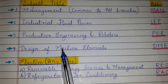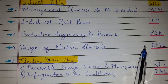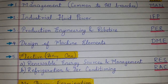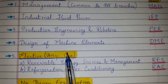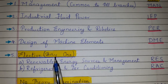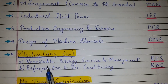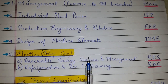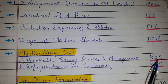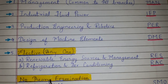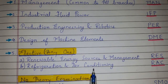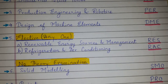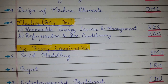Design of Machine Elements has the abbreviation DME. The elective subjects include any one of the following: Renewable Energy Sources and Management, abbreviated as RES, or Refrigeration and Air Conditioning, abbreviated as RAC.